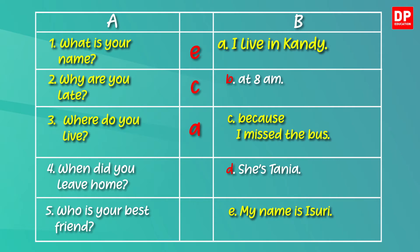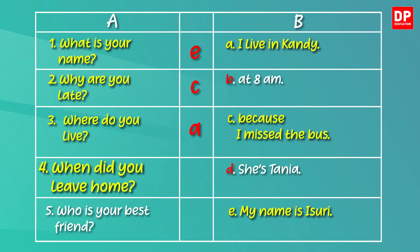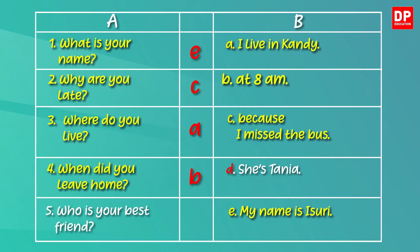Now the fourth one. Here the question is: when did you leave home? So the answer should be a time, date, month, or a year. Here is the time you left home. The answer is B — at 8am.